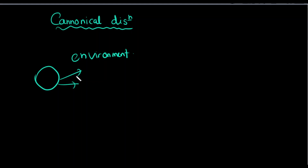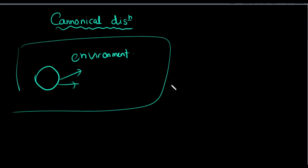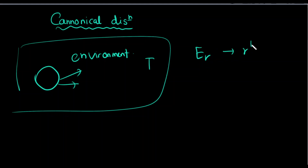If we want to consider a system in thermal contact with the environment, we will consider this system. This system has a particular state, which we call state r, with corresponding energy Er.